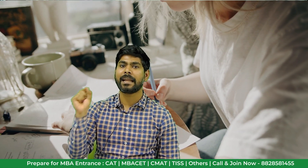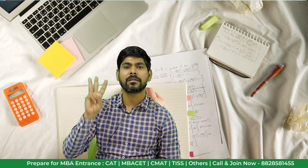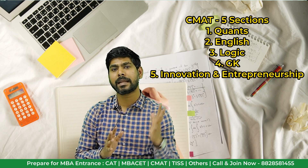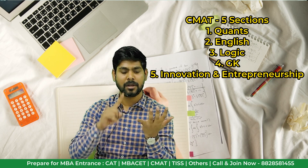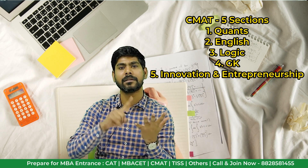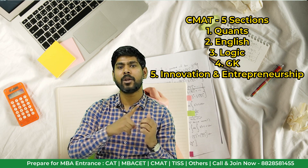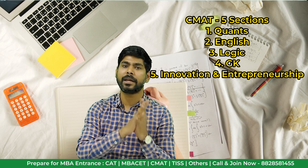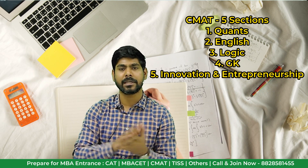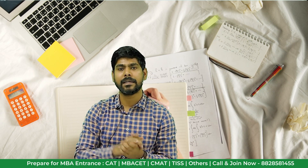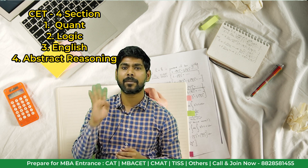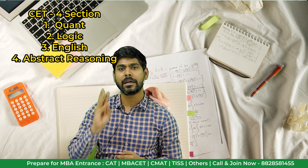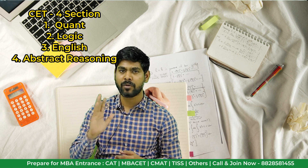Third difference is paper pattern — number of sections. In CMAT there are five sections: Quant, English, Logic, GK, and Innovation & Entrepreneurship. This last section was recently added in the last two years. In CET there are four sections: Quant, Logic, English, and Abstract/Visual Reasoning.